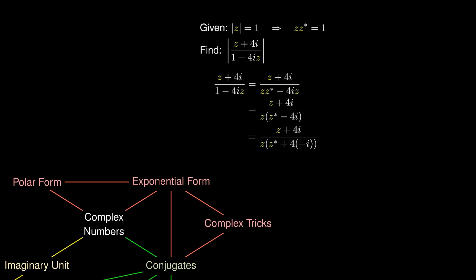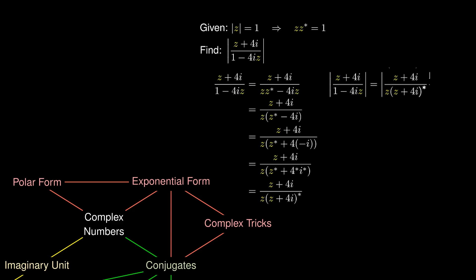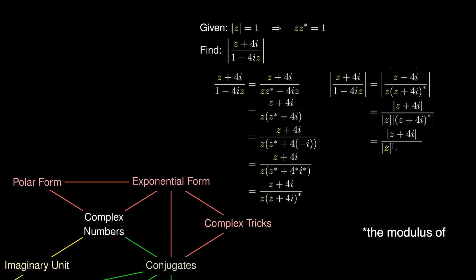Since 4 = 4* and -i = i*, we have z* + 4(-i) = (z + 4i)*, which simplifies to the conjugate. Taking modulus on both sides and using the fact that the modulus of the conjugate equals the modulus of the original, |z + 4i|* = |z + 4i|.